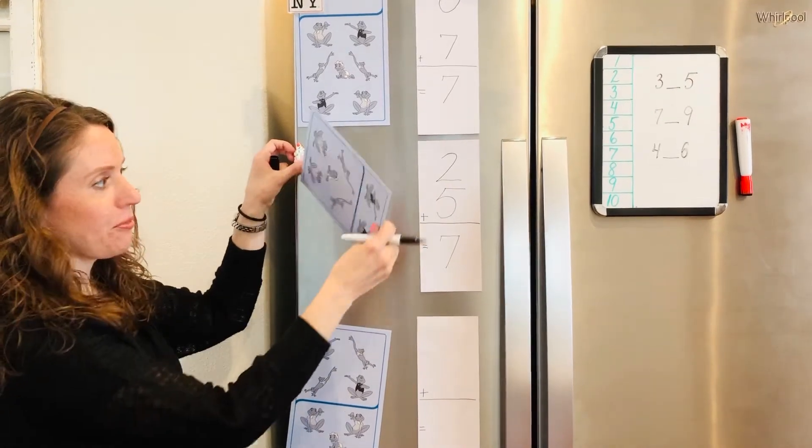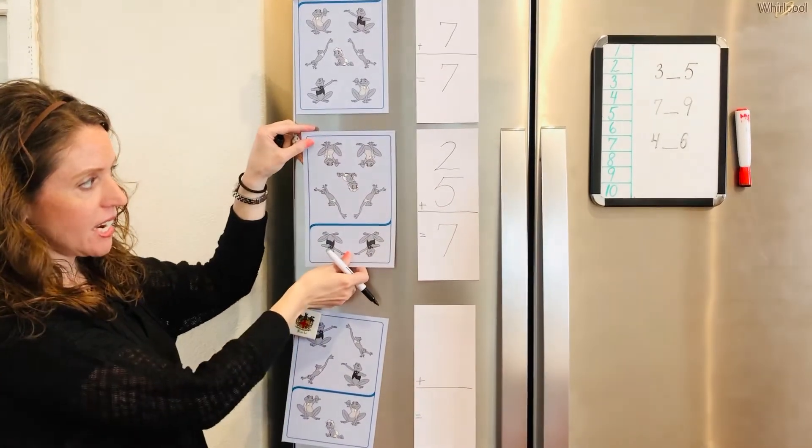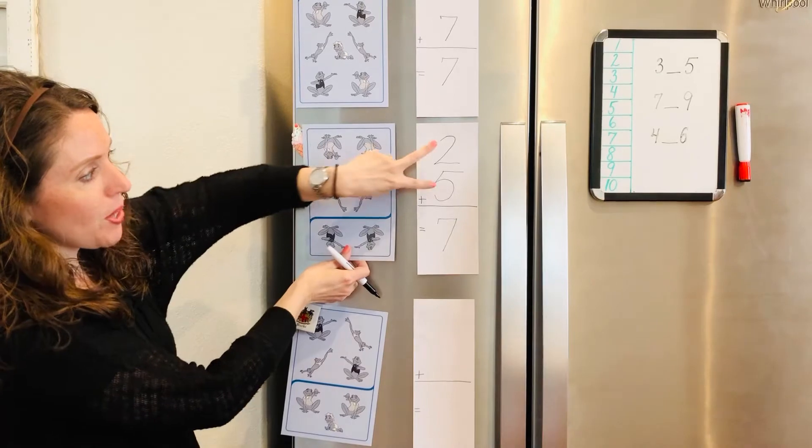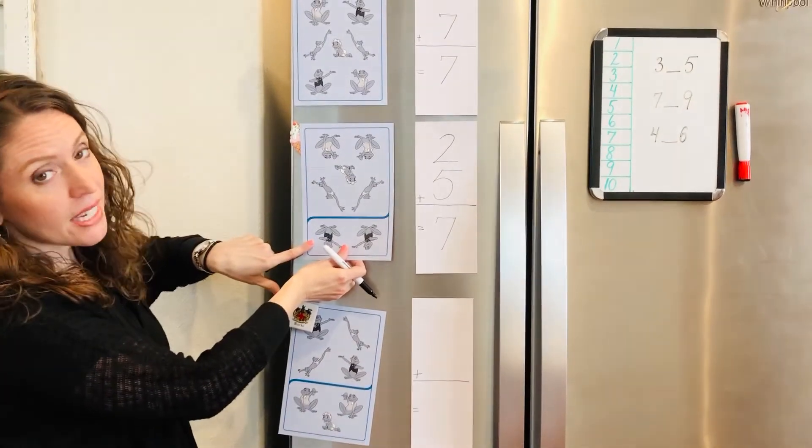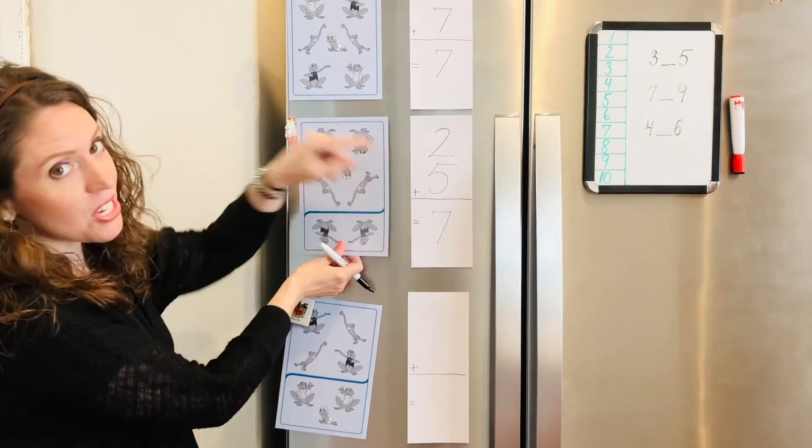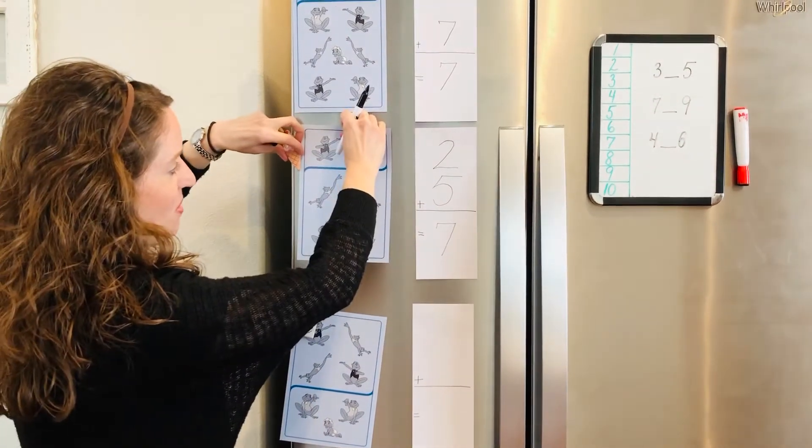If I took this card and I flipped them upside down and they're standing on their head, we would just flip these two numbers and say that five frogs plus two frogs equals, still your answer is seven frogs.